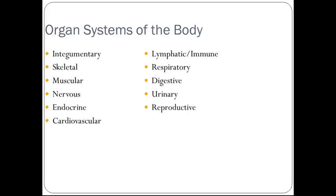Organ systems of the body. There are 11 major systems: the integumentary, skeletal, muscular, nervous, endocrine, cardiovascular, lymphatic and immune, respiratory, digestive, urinary, and reproductive. It is important to note that certain organs can be in multiple organ systems.